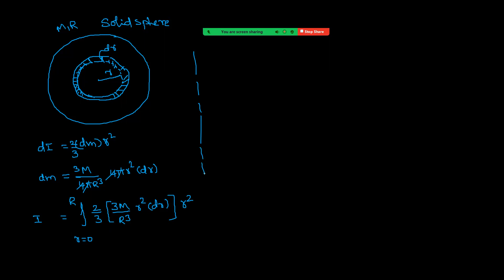Taking constants outside, 3 and 3 cancel. Taking 2M/R³ outside, remaining is r⁴·dr. Integrating gives r⁵/5. Substituting limits, it becomes 2/5 MR². So for a solid sphere about any diameter, moment of inertia is 2/5 MR².